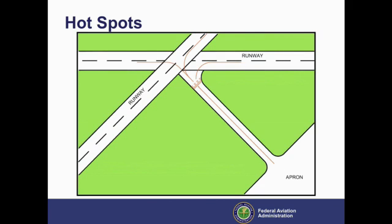In this example, we have several design flaws. A straight taxiway leads directly from the apron to runways. The runway-taxiway intersection is at a 45-degree angle, and the taxiway connects with two runways where they intersect.